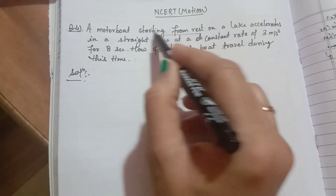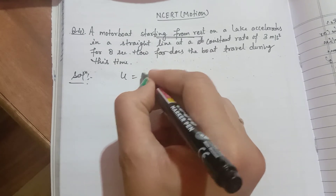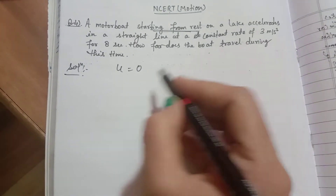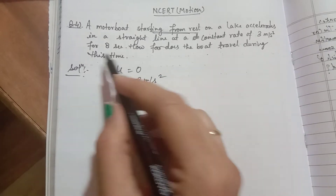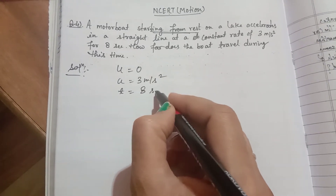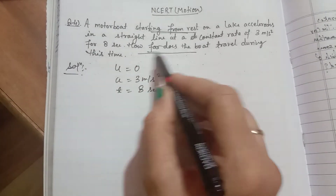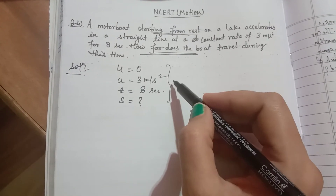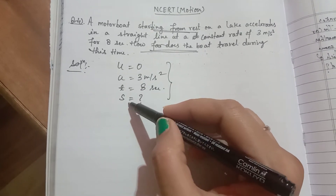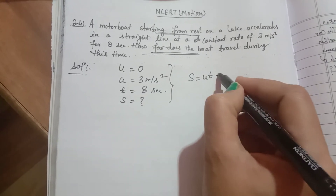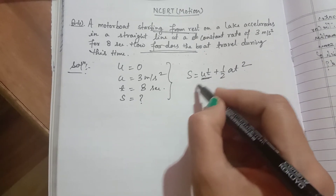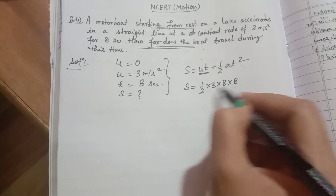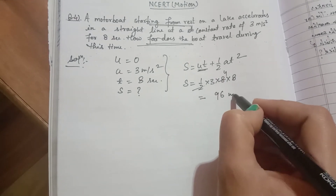Question 4: a motorboat starting from rest — starting from rest means initial velocity u = 0 — accelerates on a lake in a straight line at a constant rate of 3 m/s² for 8 seconds. Find how far the boat travels. Using s = ut + ½at²: since u = 0, s = ½ × 3 × 8 × 8 = 96 meters.